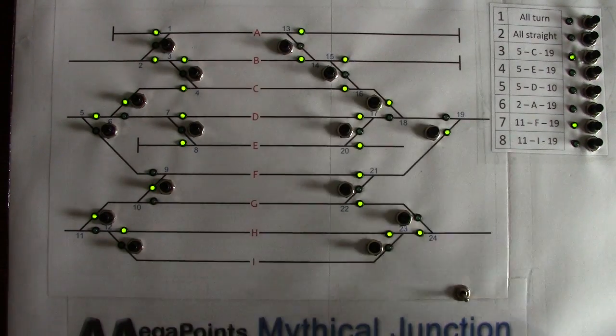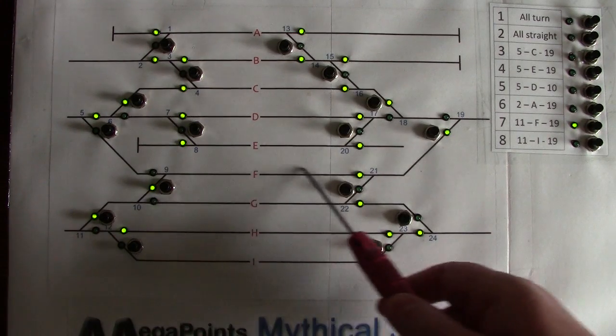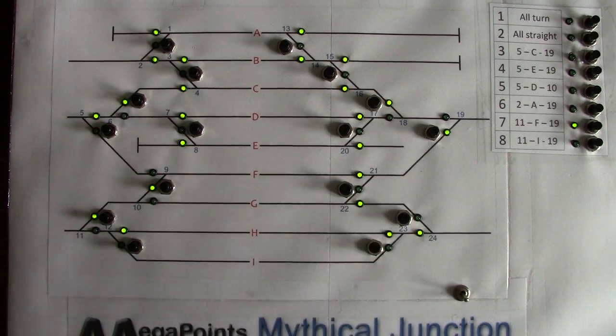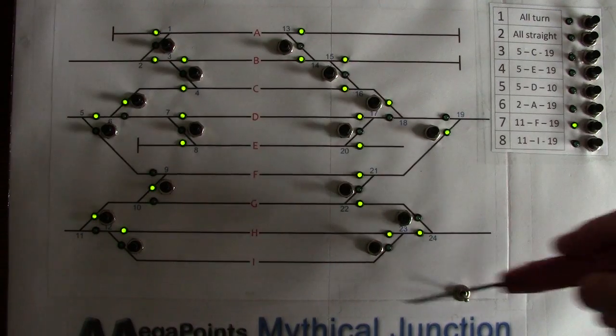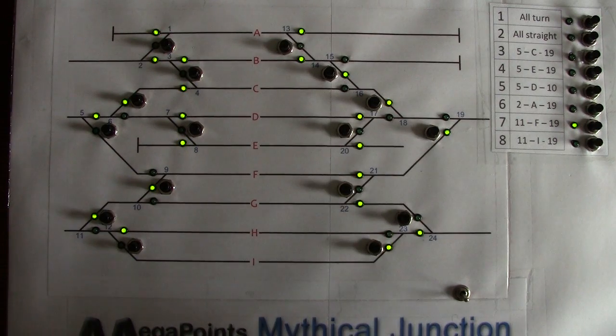So we can see eleven, up via F and out to nineteen. Now if I touch any of the points on this board, everything will behave normally until I touch a point that's part of an active route.